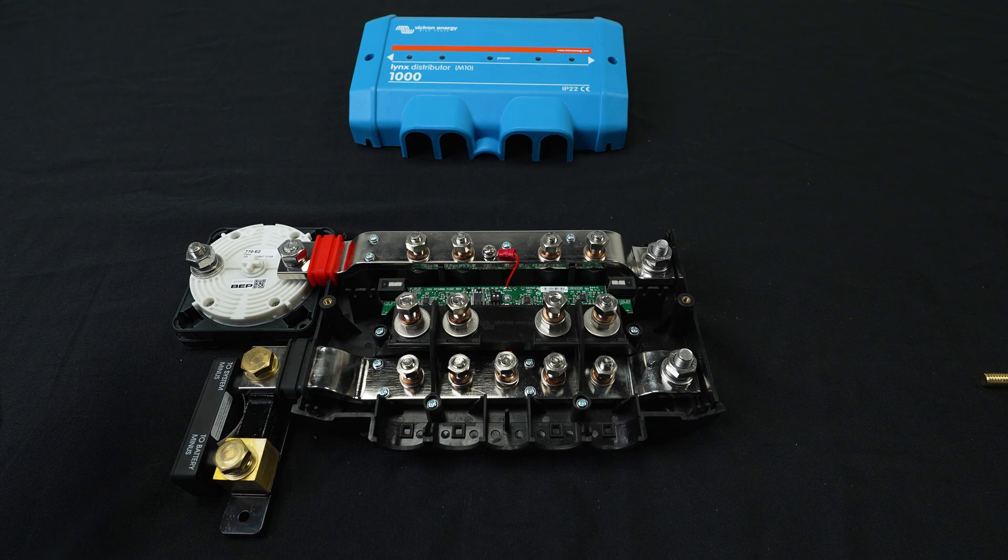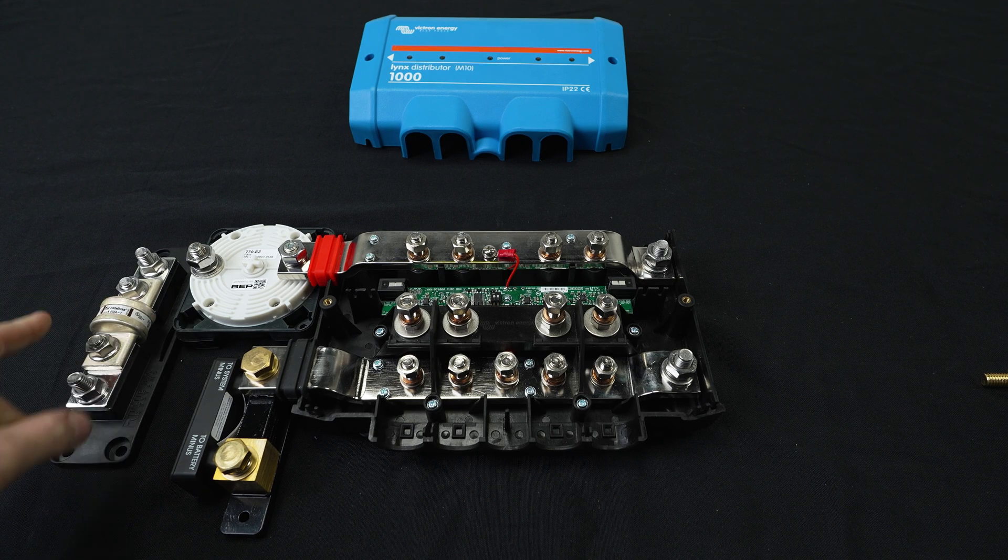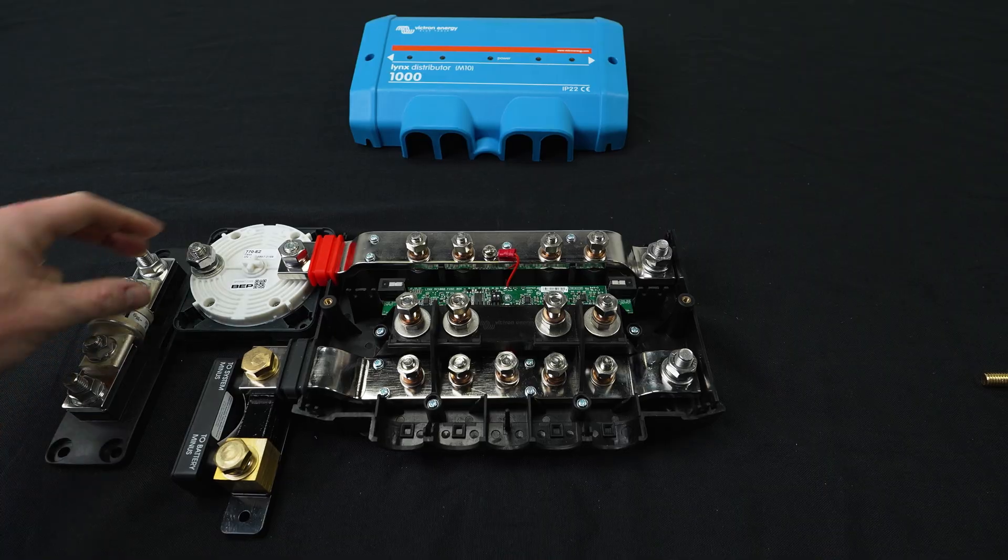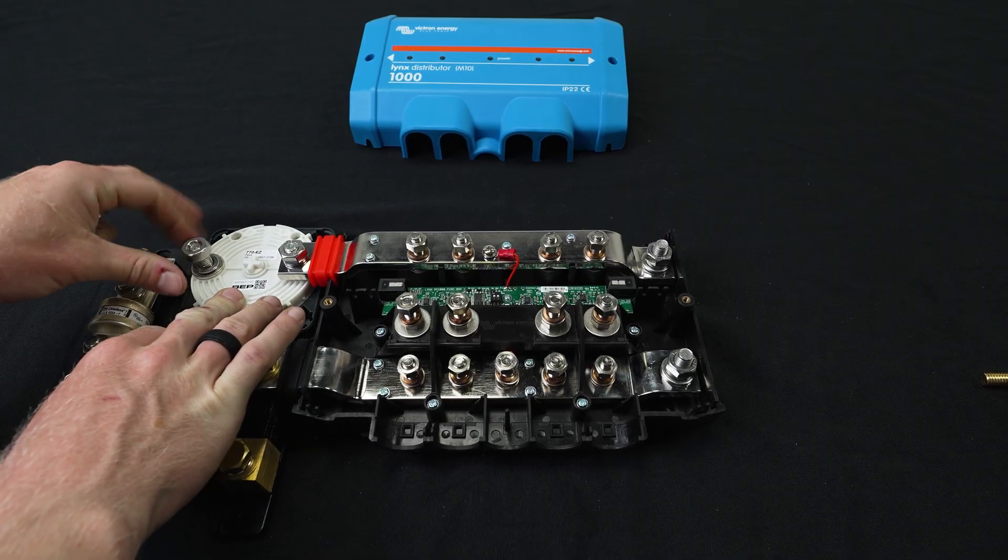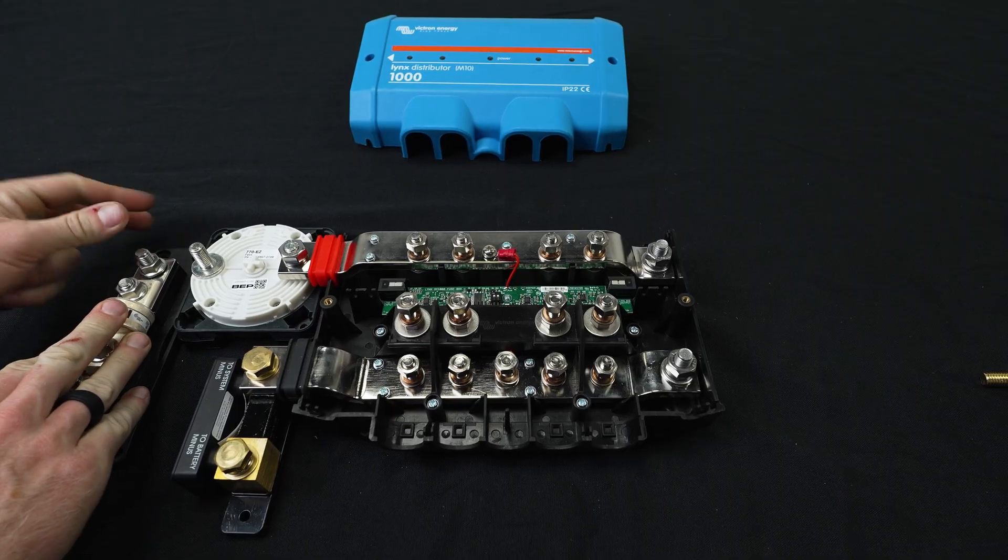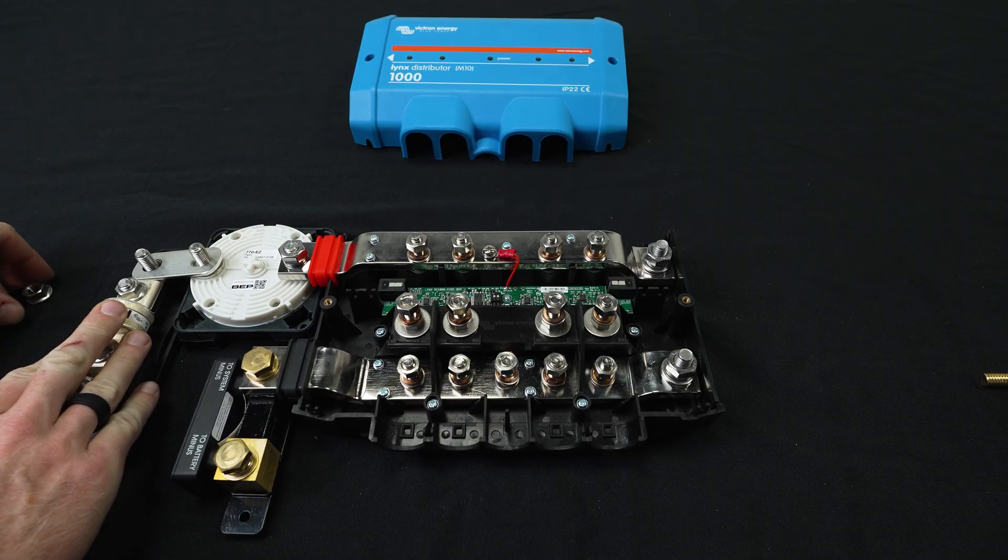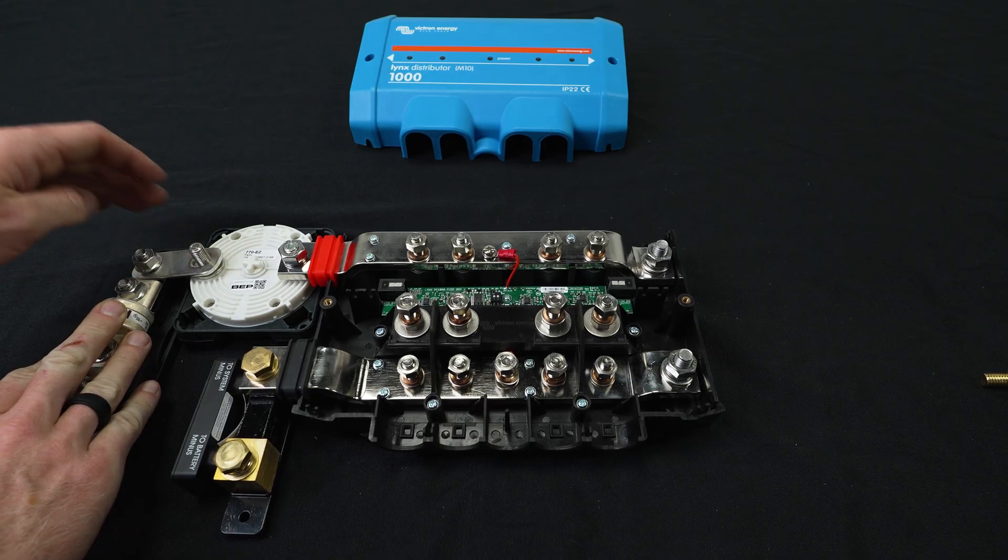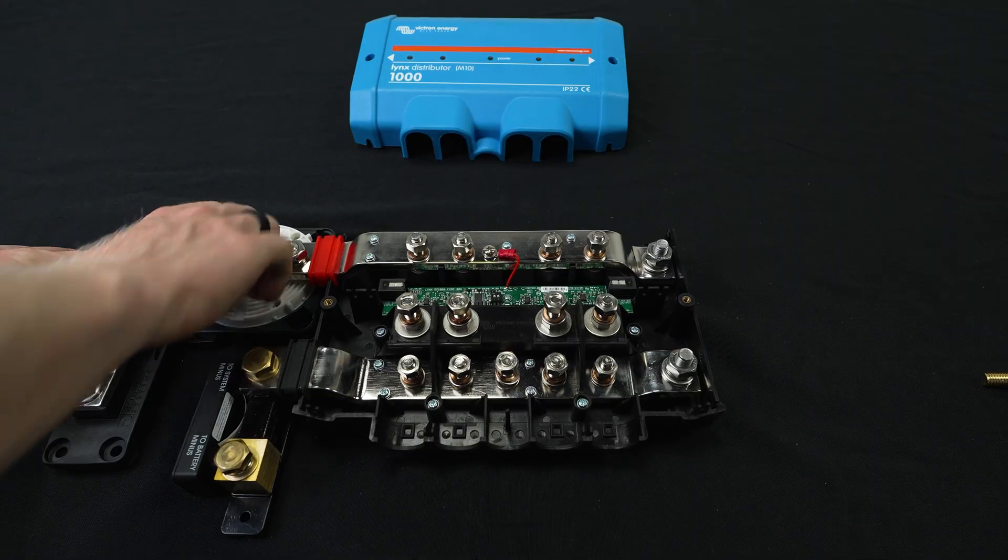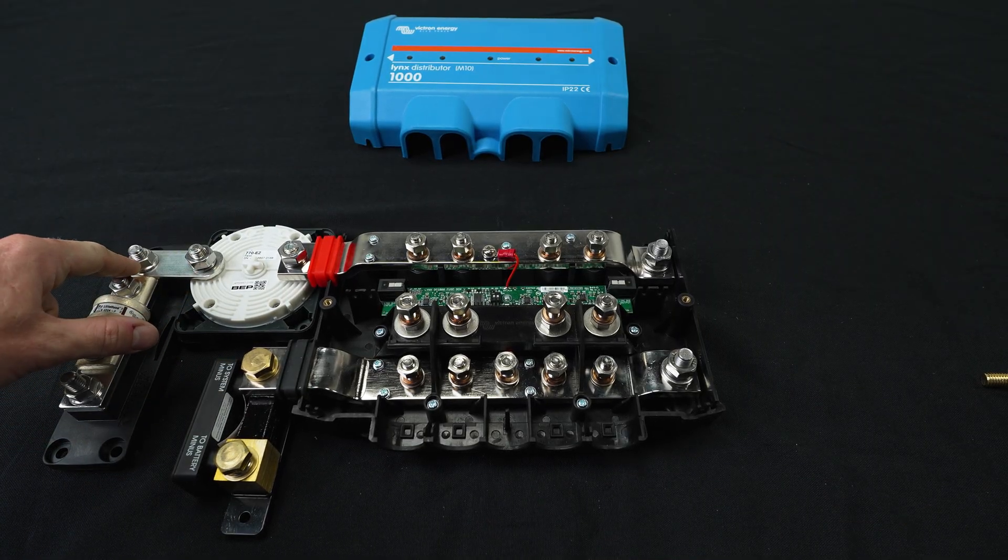Threads in there nicely. And this is asking for a 20 newton meter torque spec. Last but not least, if you're looking to install a class T fuse, you can position that to the left of the shunt. We sell a little spacer to go underneath. I don't have one handy right now, but we will link that in the description. And you'll use the link bar that we provide to link the two together. And again, the torque spec on this is 20 and this is going to be 20 as well.